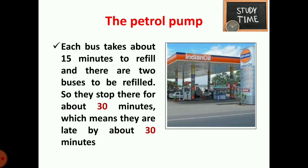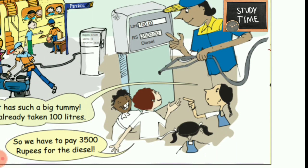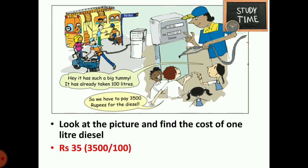During the journey they stopped at a petrol pump. Each bus takes about 15 minutes to refill, and there are two buses to be refilled, so they stopped for 30 minutes — making them late by 30 minutes. After filling, they paid ₹3,500. Looking at the picture, the cost of 100 liters of diesel is ₹3,500. Therefore, the cost of one liter of diesel is ₹3,500 divided by 100, which equals ₹35.